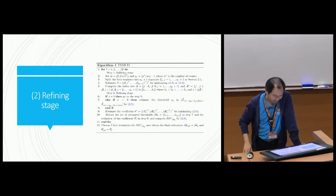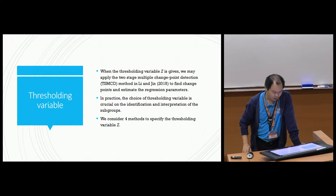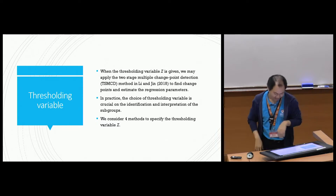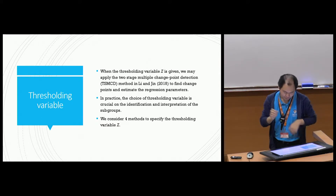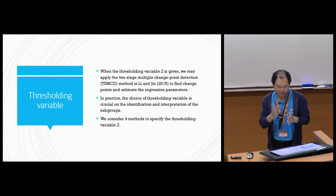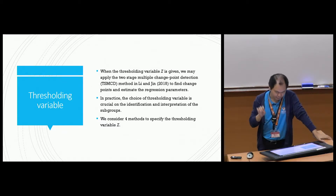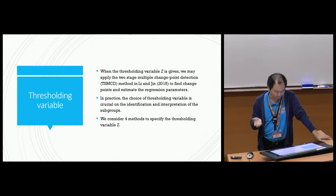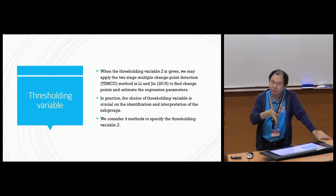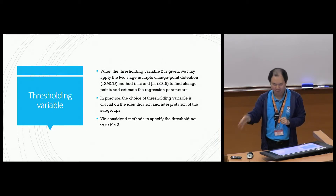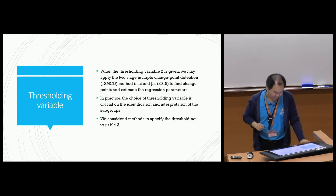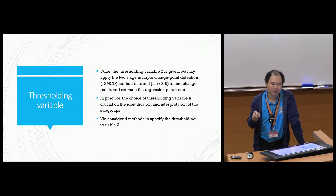To address the question from the audience: we have this z variable, the thresholding variable. Normally, in many situations, we can assume z is given — as in the previous work. However, in practice, the choice of this variable could be very important. How you choose this variable will determine how you interpret the final subgroups, which are defined according to z. If you don't choose z wisely, you may end up with very poor subgroups. So we have to think about how to select this variable more appropriately.